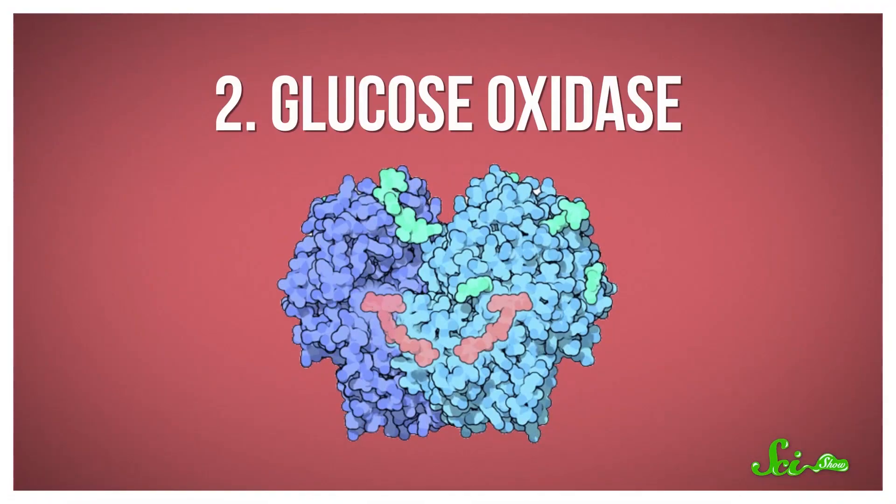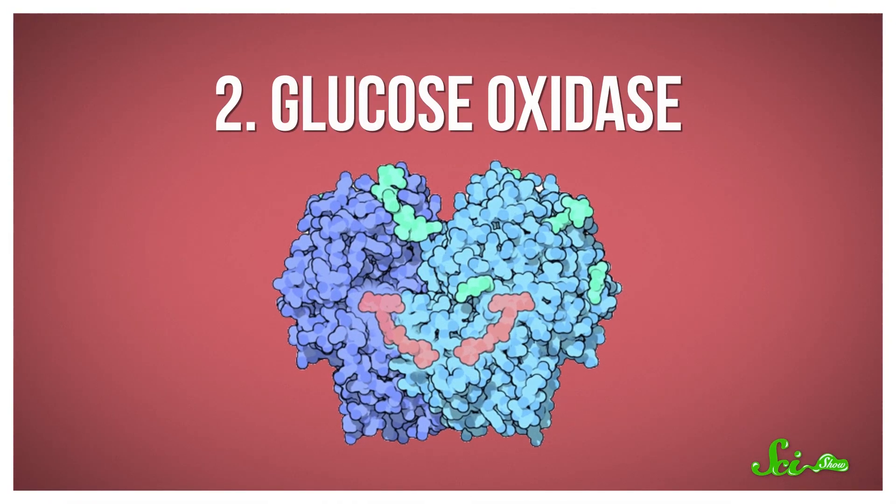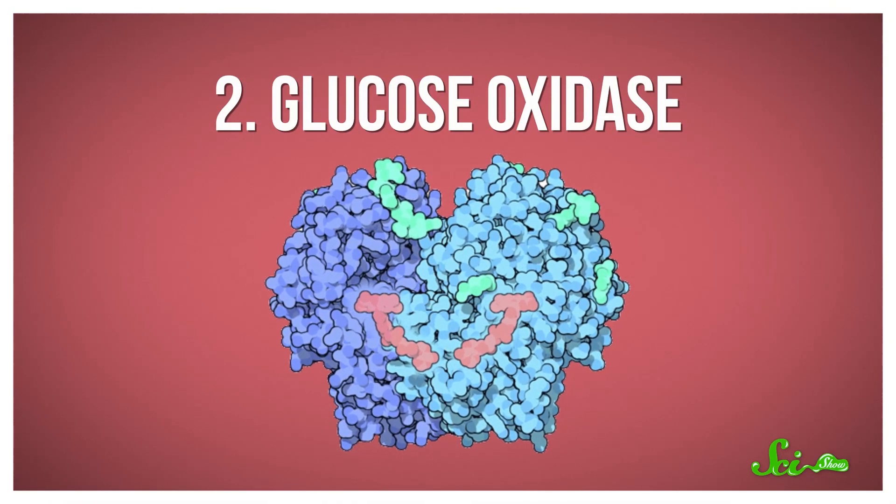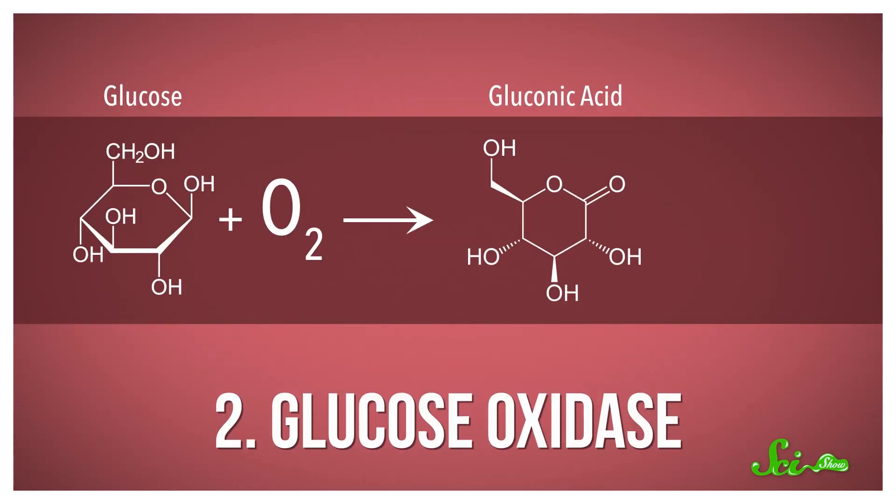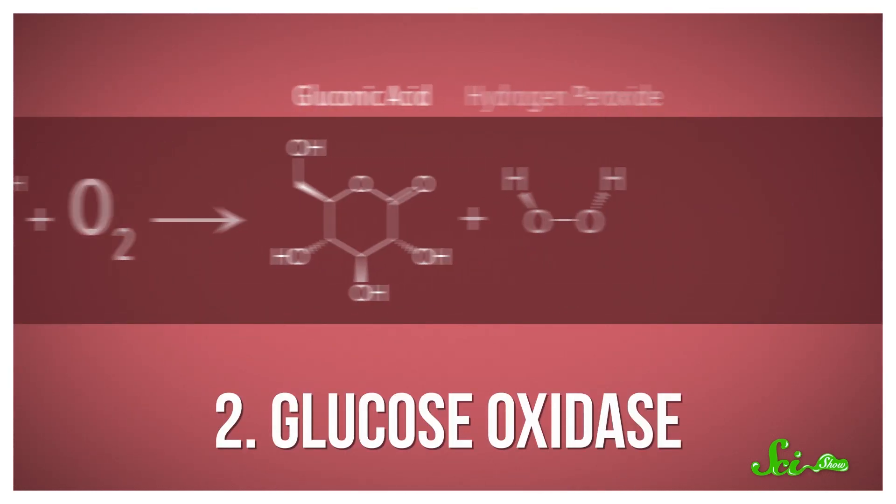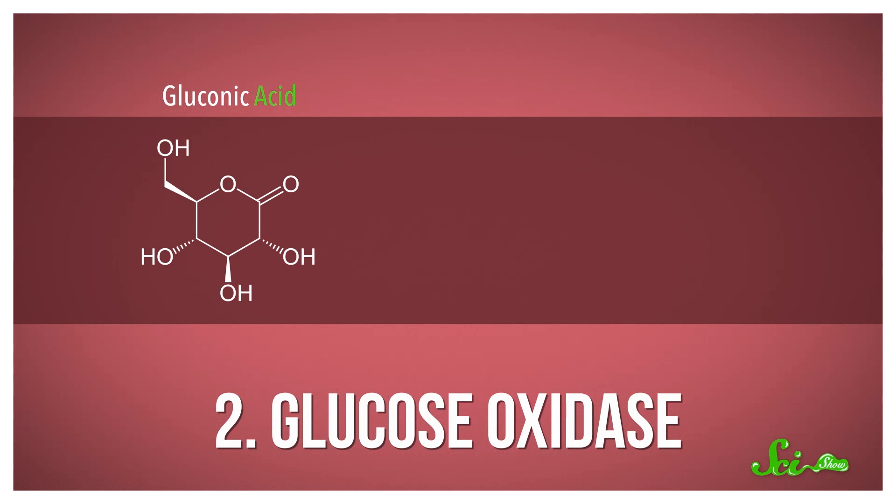The second thing is that when bees make honey, they throw in an enzyme called glucose oxidase. And bacteria hate glucose oxidase because it produces two different compounds. It converts glucose to gluconic acid and hydrogen peroxide. Gluconic acid is, you guessed it, an acid.